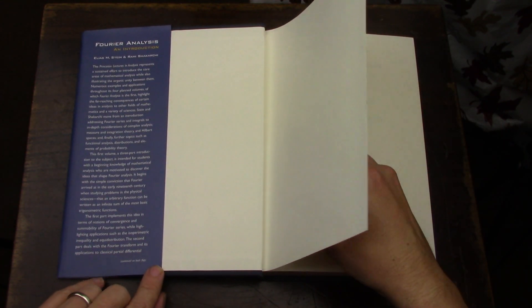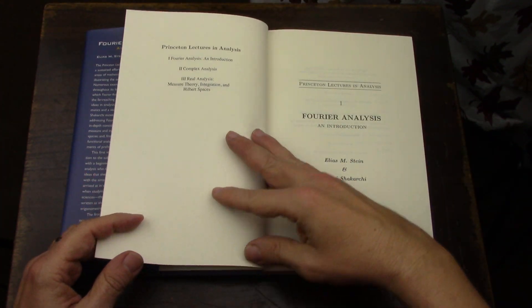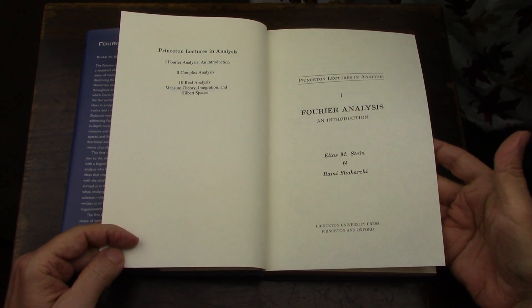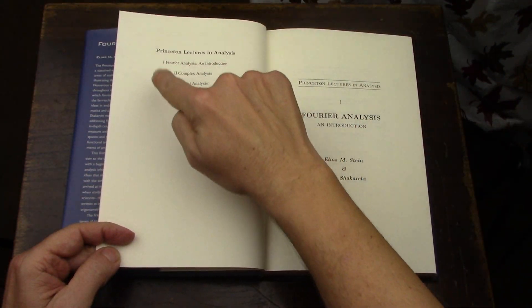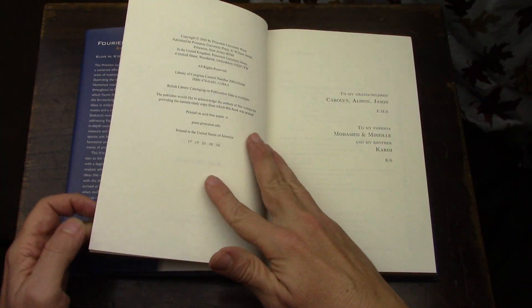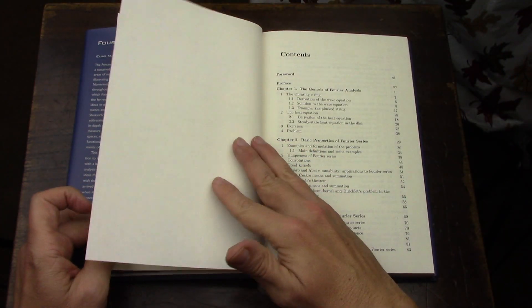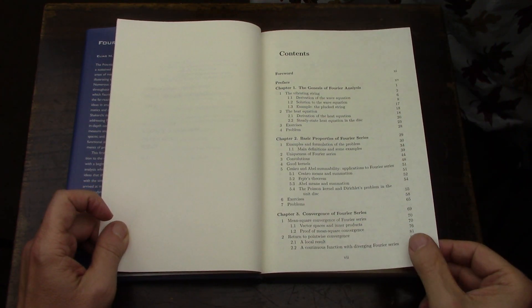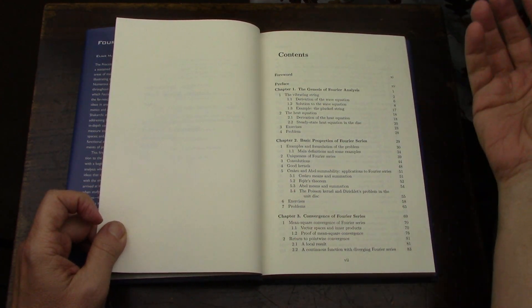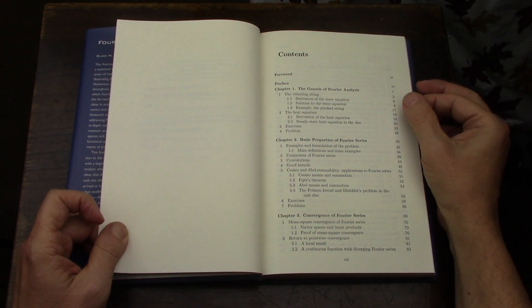Well, first let me just show the book, and then I'll get to that. So the book starts with Fourier Analysis, and at the time I guess when this was published they hadn't done the fourth volume.